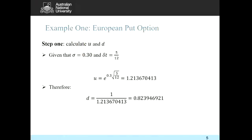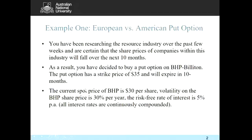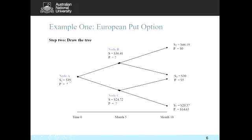Once we have the proportional increase and decrease, the next step is to draw the tree. The current share price of BHP is $30. We multiply $30 by the proportional increase 1.2136 to get a share price of $36.41 on the up branch, and multiply $30 by the proportional decrease 0.82394 to get $24.72 on the down branch. We then repeat the same process to work out the branches for the second step.